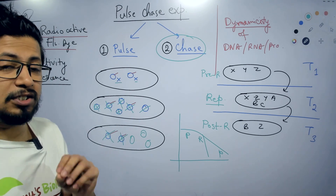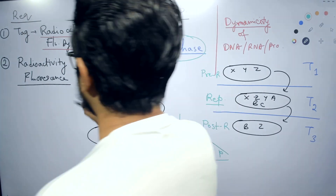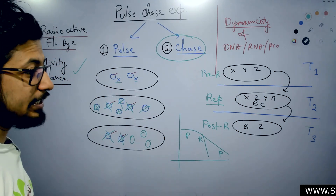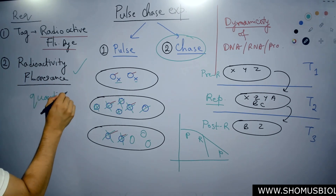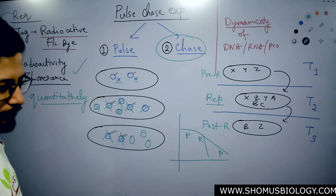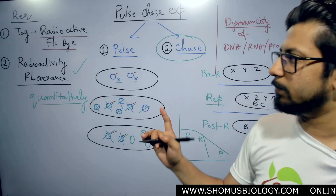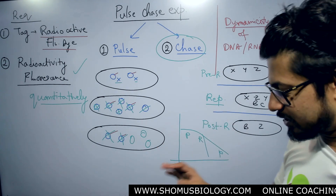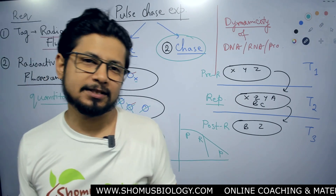That's all regarding the Pulse Chase Experiment. Remember, how to measure the fluorescence — we have the measuring devices, the radioactivity measuring device or fluorescence measuring device, which will quantitatively — remember, quantitatively — measure the fluorescence from there.